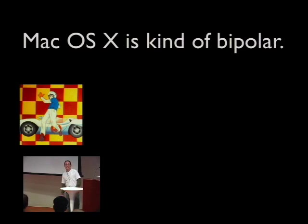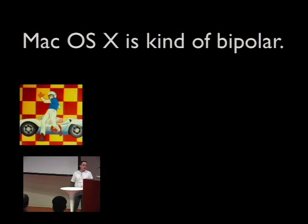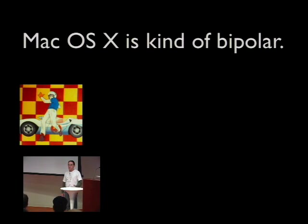OS X is kind of bipolar, as we learned through developing VMware Fusion. It has a chunk called Mach — the Mach OS came from CMU and is a really simple operating system that just manages memory management, message passing, scheduling, and a little bit of threading. This was originally the foundation of OS X, but that didn't give them actual functionality, just a really cool abstraction.